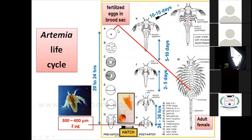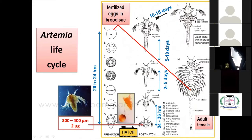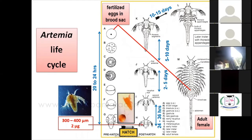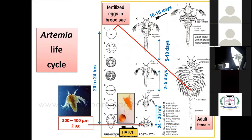Within 20–24 hours a cyst can develop into a nauplii. After 24 hours, around 36 hours, it becomes almost a pattern of the egg which is also very rich in lipid and nutrition.